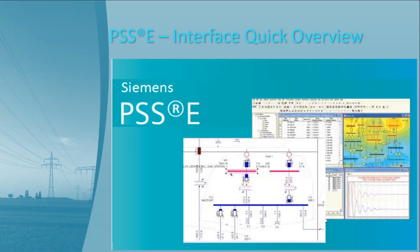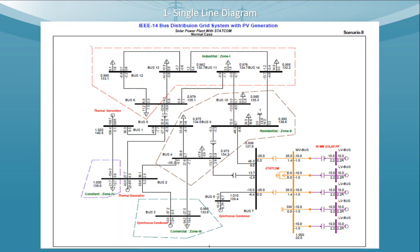In the PSSE interface quick overview, before going to the hands-on example in the next webinar, let's have a quick overview of the interface. This is the single line diagram generated by PSSE. You can see different components with different ratings, and importantly, the different ratings are shown with different colors — these are the system voltage default levels. You can define your own default levels and colors to customize the diagram in your own fashion.